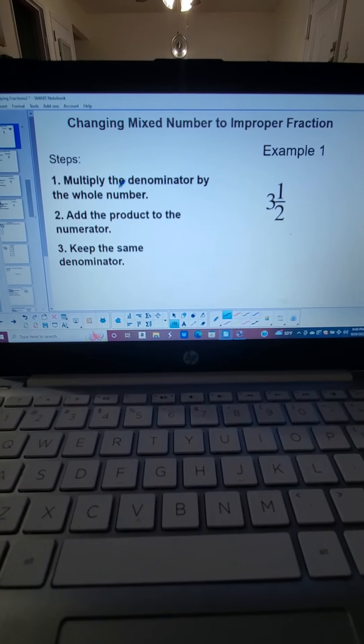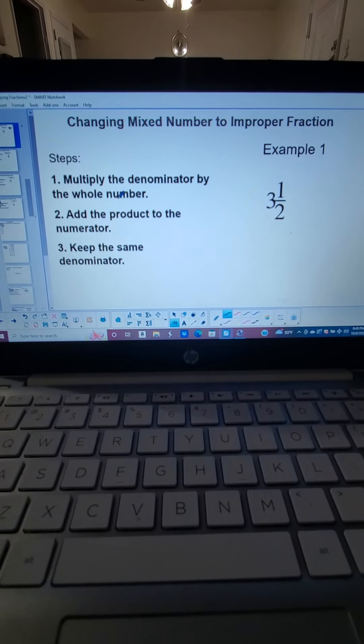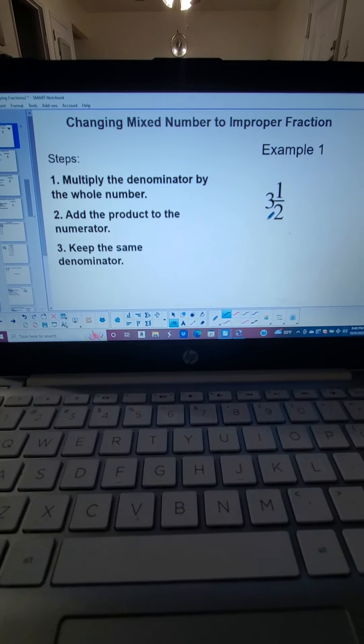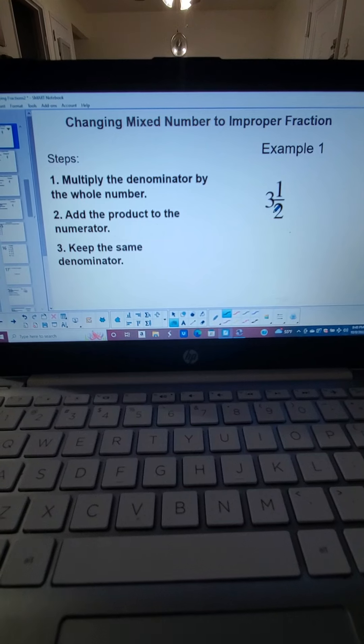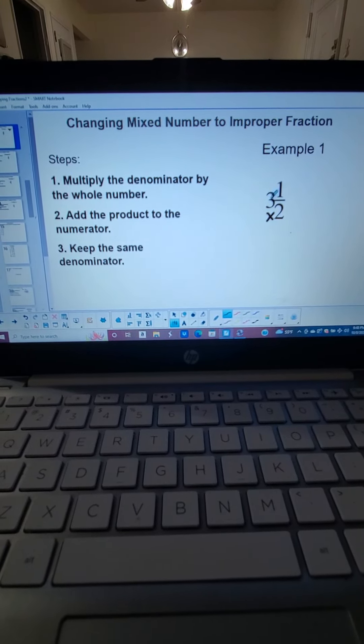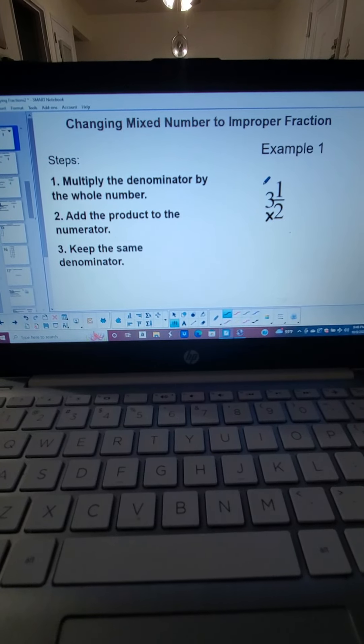The first step in changing mixed number to improper fraction is to multiply the denominator of the fraction by the whole number. So in this case, we multiply 2, which is the denominator, and 3, which is the whole number.